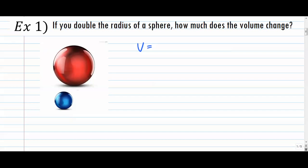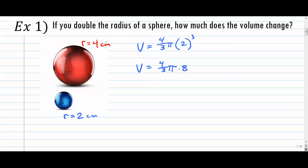Let's say the radius of the blue sphere is two centimeters, which means the radius of the red one would be double — four centimeters. So let's find the blue volume first. It's four-thirds times pi times r to the third power, so that would be four-thirds times pi times eight, which is 32π/3, about 33.51.